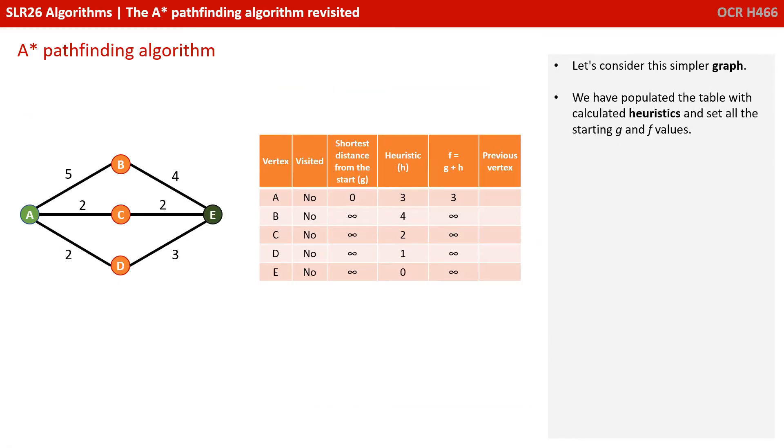So let's consider this much simpler graph. We've populated the table, we've calculated heuristics, and we've set all the initial starting G and F values.